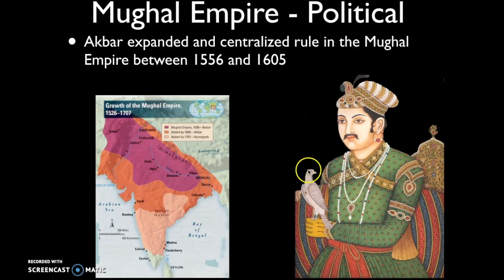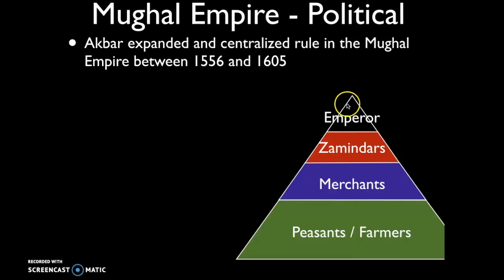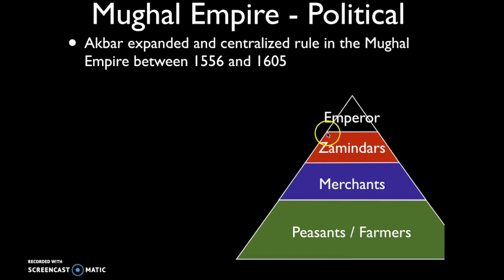Babur founded the Mughal Empire, but it is subsequent rulers you need to be most familiar with — particularly two. Akbar centralized rule for the Mughal Empire between 1556 and 1605, expanding its territory significantly. The Mughal ruler was known as an emperor; below the emperor were the zamandars, localized princes and local leaders who controlled large territories. As the emperor consolidated power, the zamandars lost power by definition.